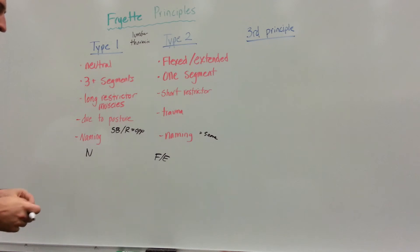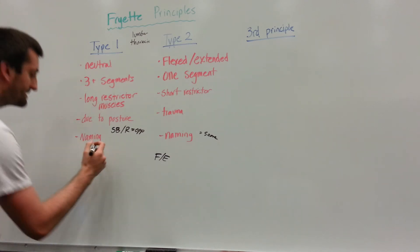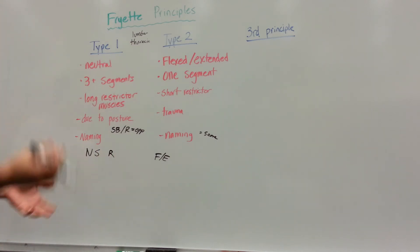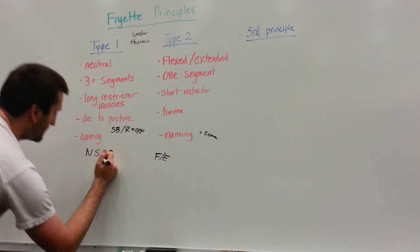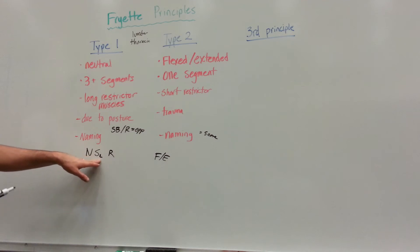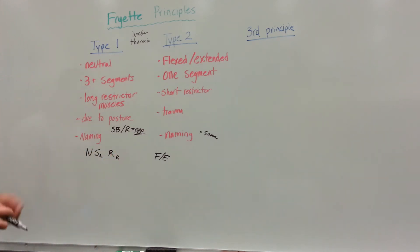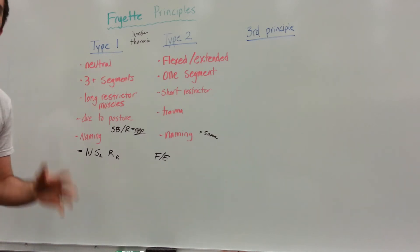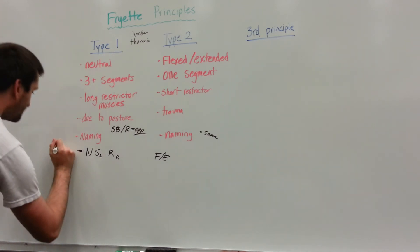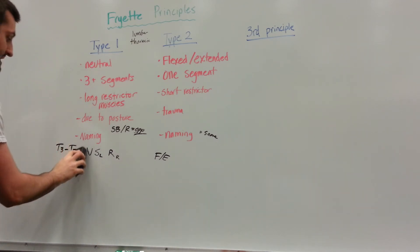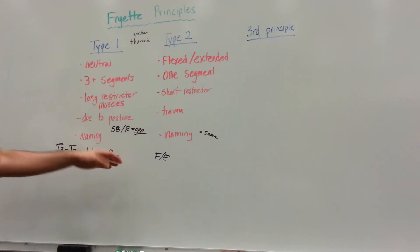Let's do a mock naming example. Type 1s are always going to be neutral, so we start with N. Let's say segments T3 through T7 of your thoracics are neutral. If they're side bending left, then you know rotation has to be in the opposite direction — so side bending left means rotated right. The full naming would be: T3 to T7, neutral, side bending left, rotated right.